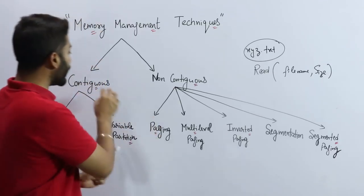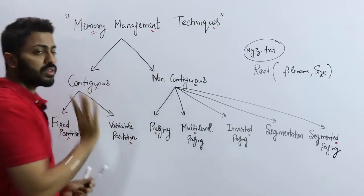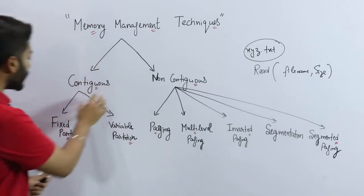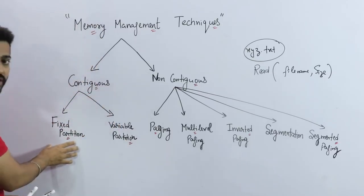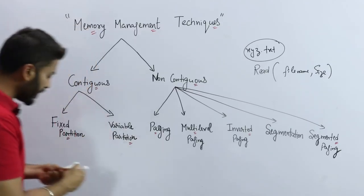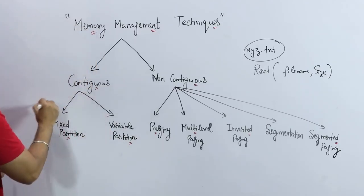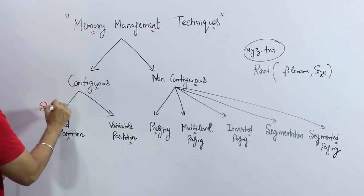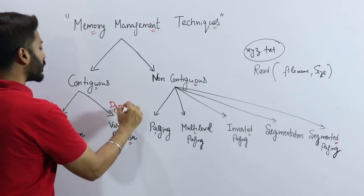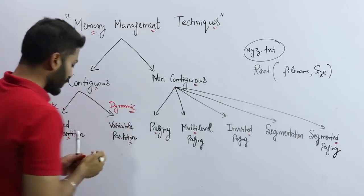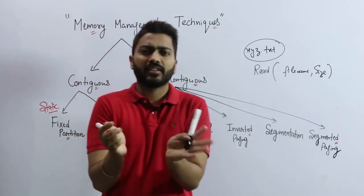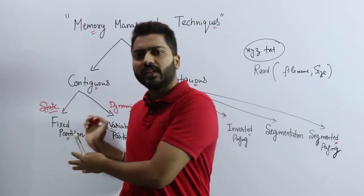Memory management techniques are broadly of two types: one is contiguous and another is non-contiguous. In contiguous, there is fixed partitioning — also called static partitioning — and variable partitioning, also known as dynamic partitioning.